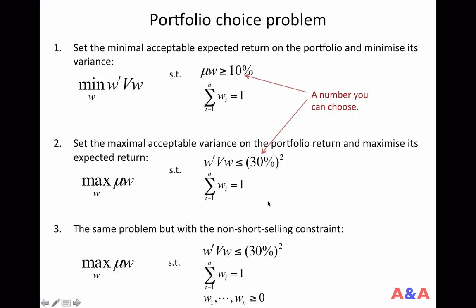If you are a very large financial institution, probably you can do some short-selling. But short-selling by individual investors is really constrained. So, it is reasonable to add a non-short-selling constraint to the portfolio choice problem by saying that all the weights should be greater than or equal to 0. In the next class, we are going to solve these problems using the Microsoft Excel solver.